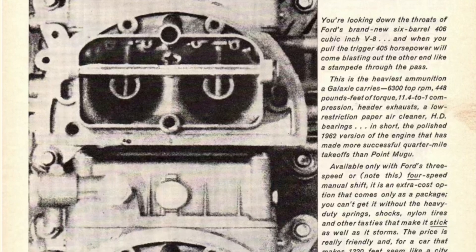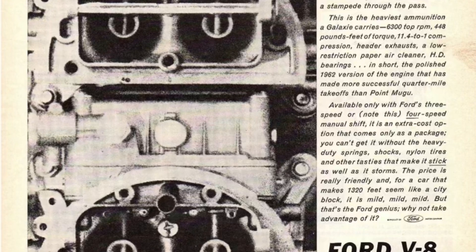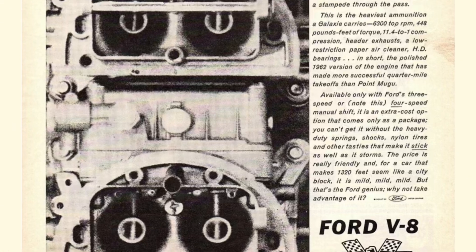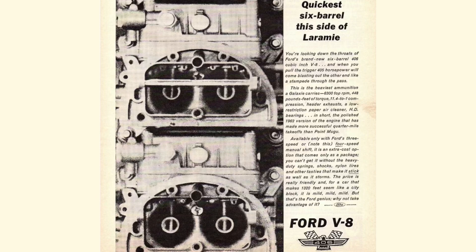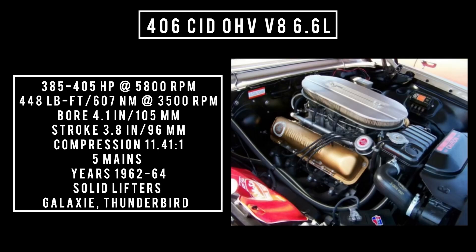There are two versions of the 406. The B-code Thunderbird 406 used an aluminum dual-plane intake manifold with a single Holley four-barrel carburetor at 600 CFM, and the more powerful G-code aluminum intake offered three two-barrel Holley carburetors with a combined 840 CFM. Introduced in 1962, offered for only two years. 406 cubic inch displacement overhead valve V8, 6.6 liters. Good for anywhere between 385 to 405 horsepower at 5,800 RPM, up to 448 pound-feet or 607 newton meters at 3,500 RPM, with a bore of 4.1 inches and a stroke of 3.8 inches. Compression was 11.4 to 1, five main bearings, solid lifters. Found in the Galaxy.